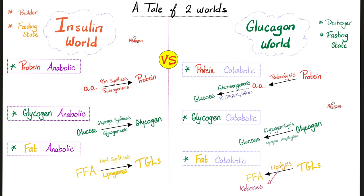Conversely, glucagon is the exact opposite — a destroyer, catabolic. You see it in the fasting state. It breaks down your protein into amino acids. It breaks down glycogen into glucose. It can take those amino acids and make them into glucose because you need energy right now — this is called gluconeogenesis. Destroying protein is proteolysis; using amino acids to make glucose is gluconeogenesis. This is genesis of glucose from new sources — something other than carbohydrates, such as proteins or some fat.